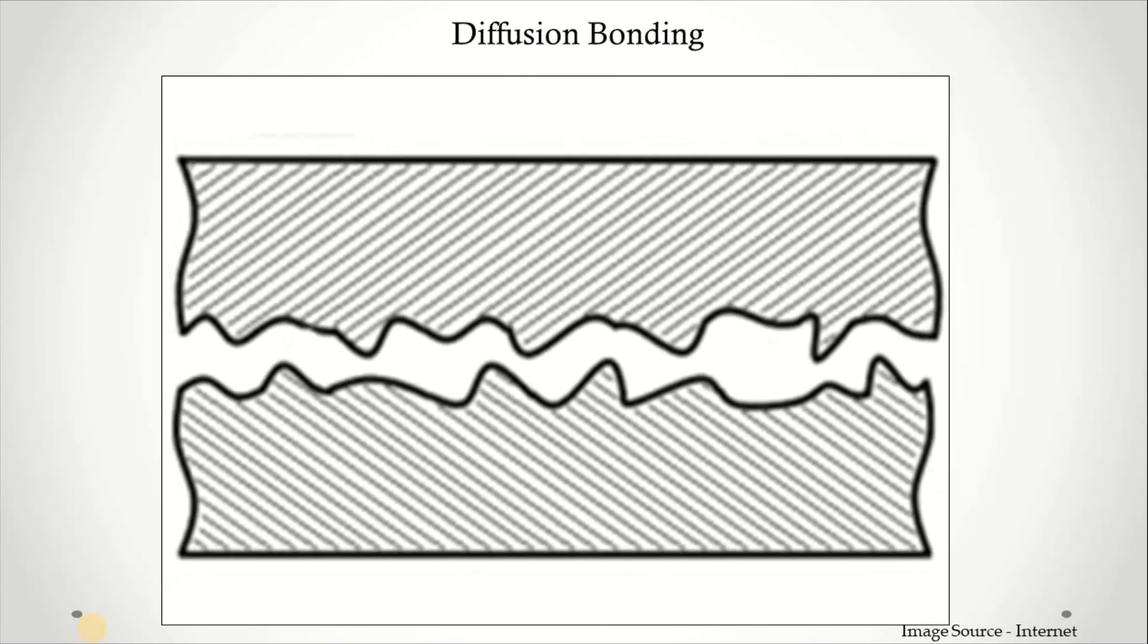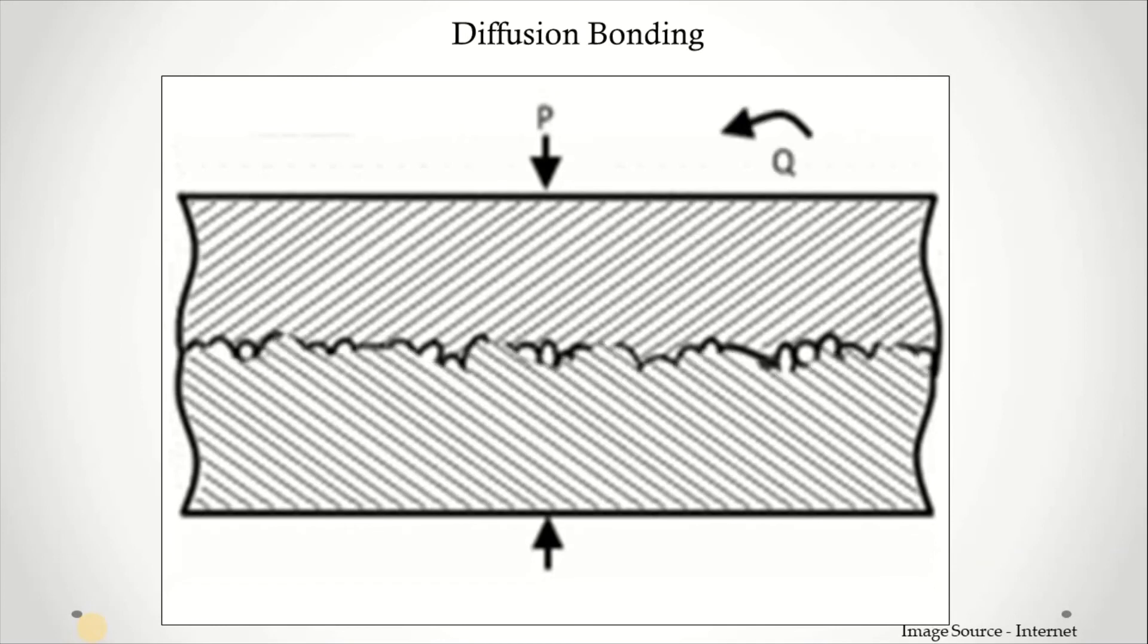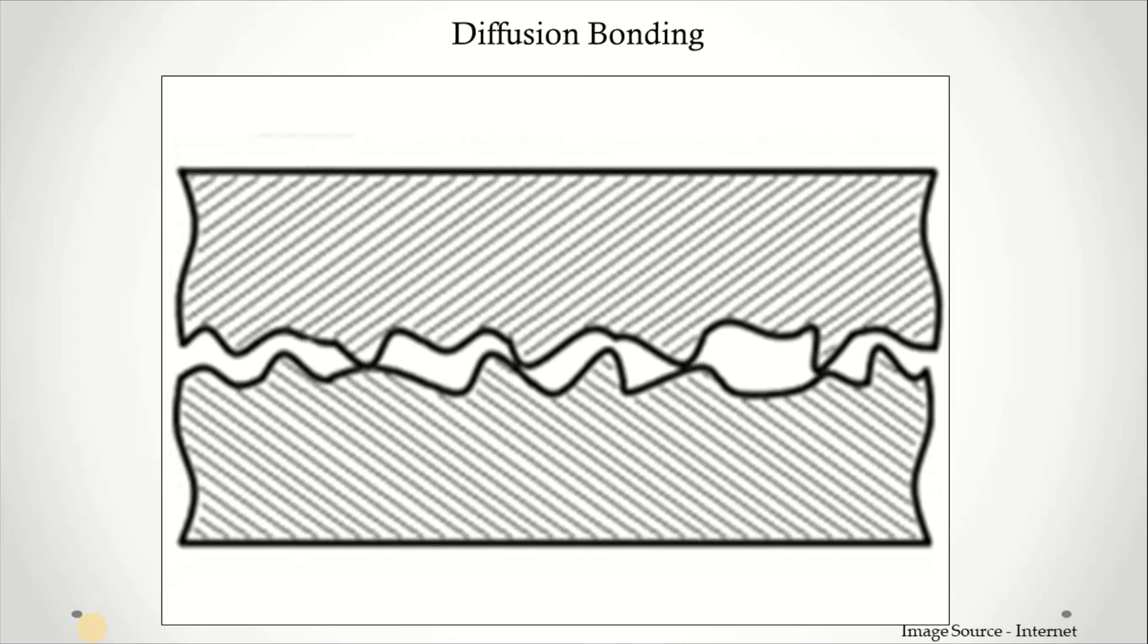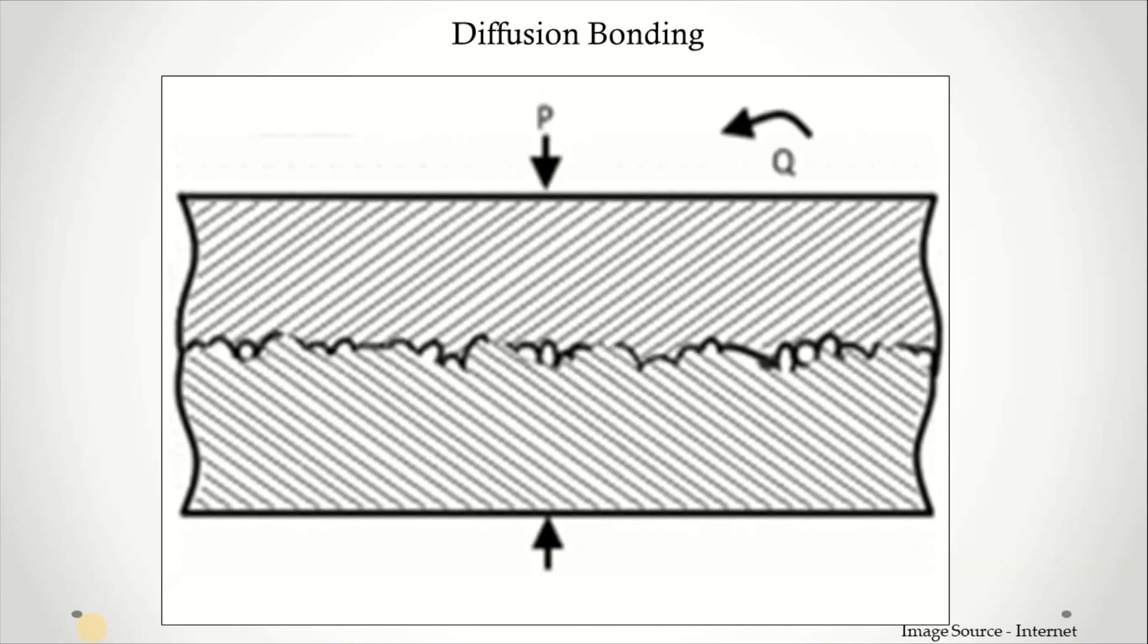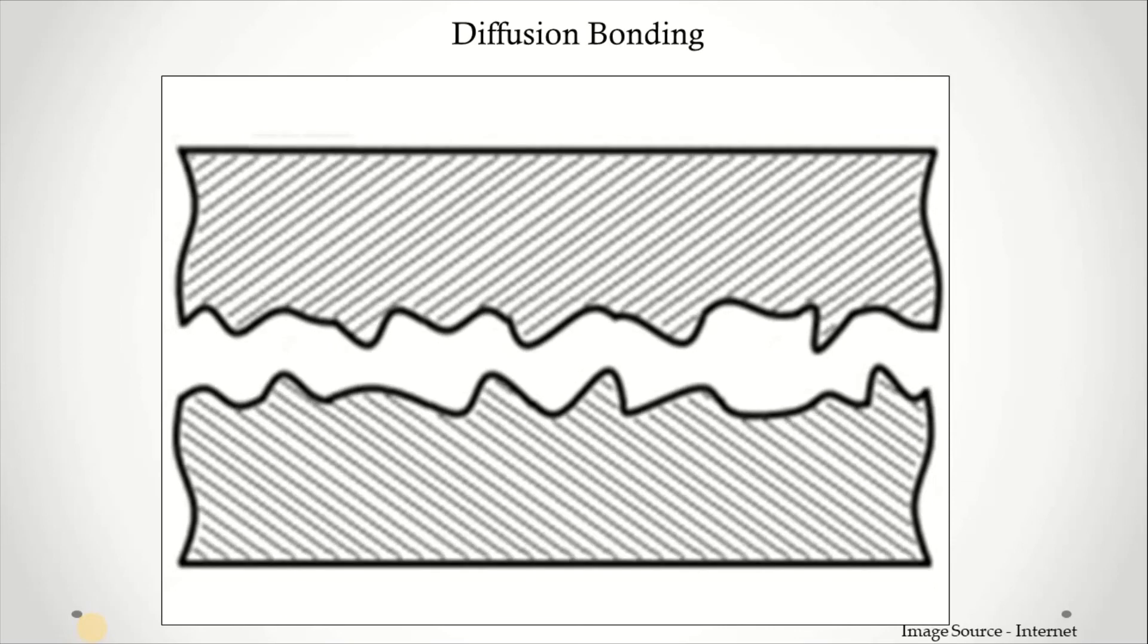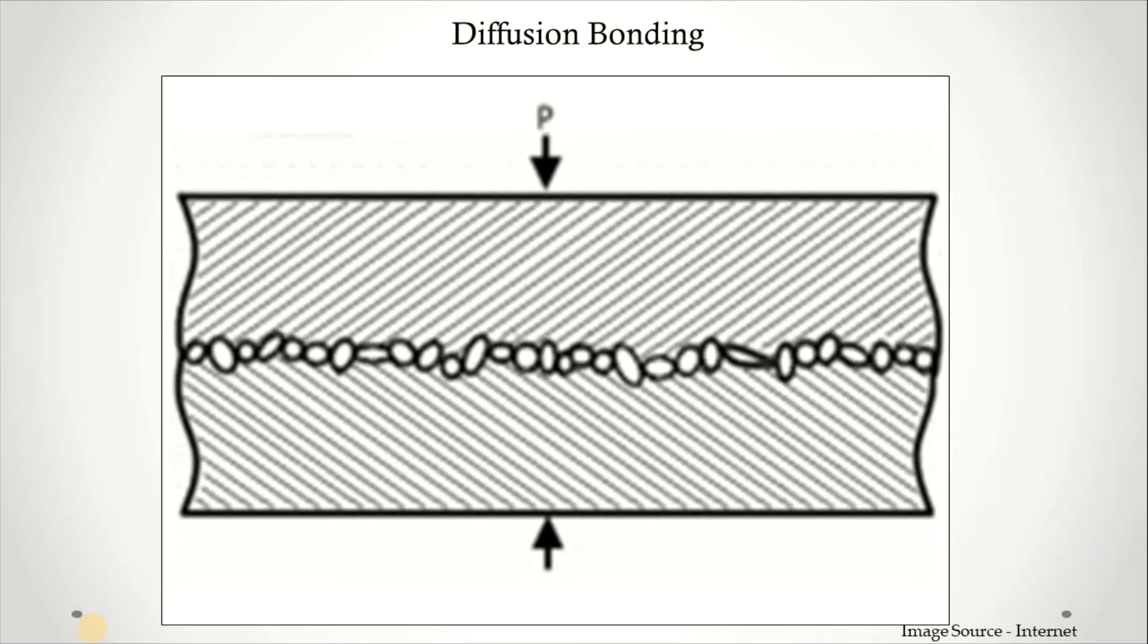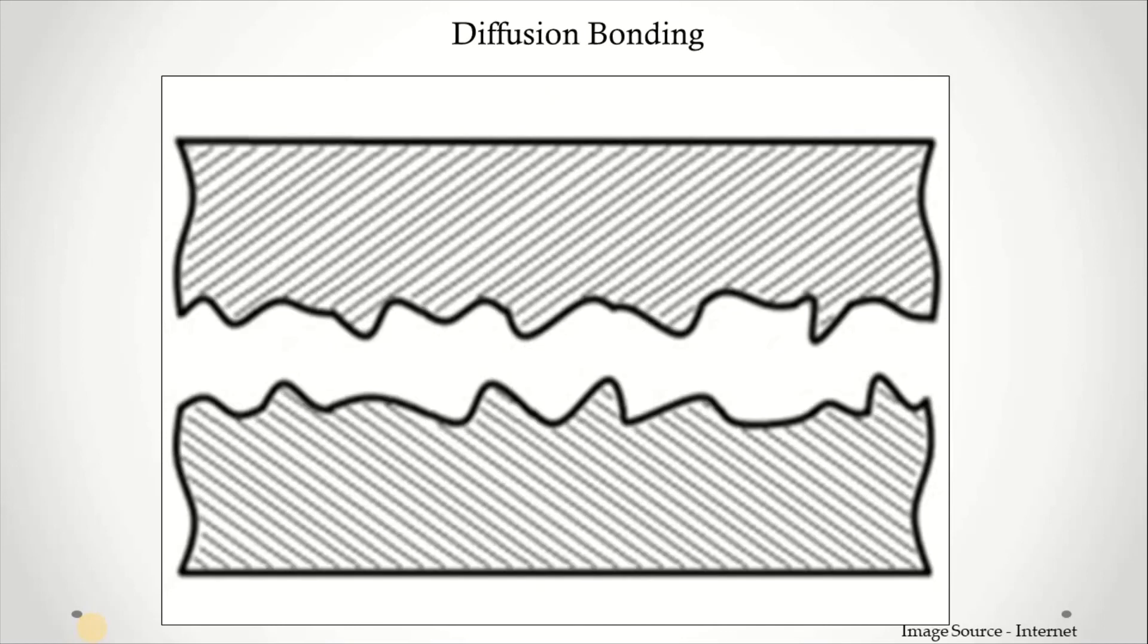Last one is diffusion bonding. It is a solid state welding technique used in metalworking, capable of joining similar and dissimilar metals. It operates on the principle of solid state diffusion, wherein the atoms of two solid metallic surfaces interface themselves over time. Here we apply pressure from both ends and it creates one bonding which is a solid state diffusion.